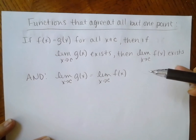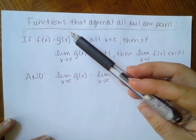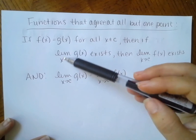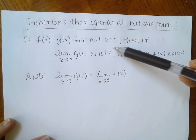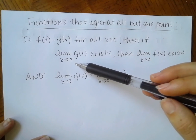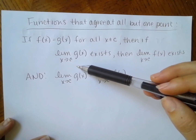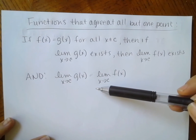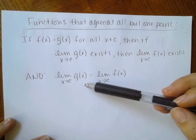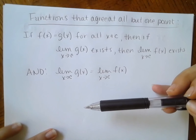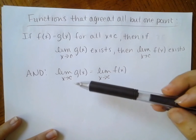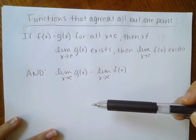We need this idea first — it's about functions that agree at all but one point. When we were working with rational functions, we were doing this. If f of x equals g of x for all x not equal to c, then if the limit of g of x exists as x approaches c, then the limit of f of x also exists and they are equal. This is what we were doing when you were simplifying rational functions and canceling common factors.